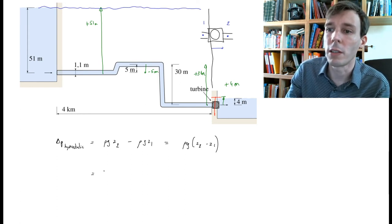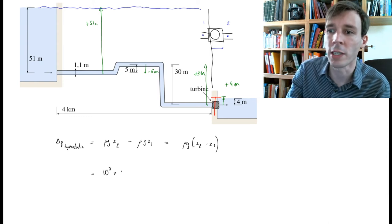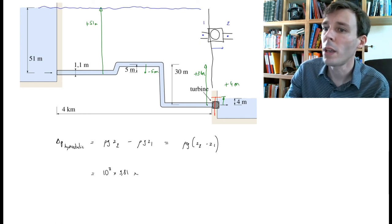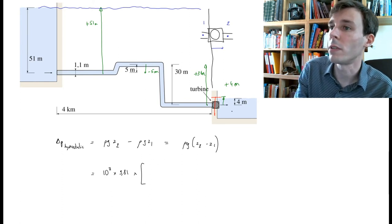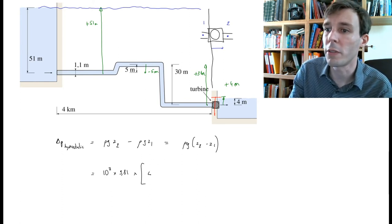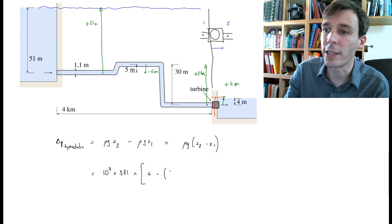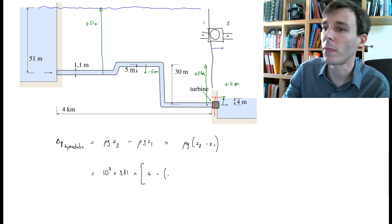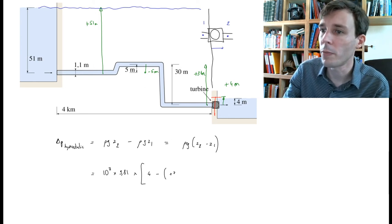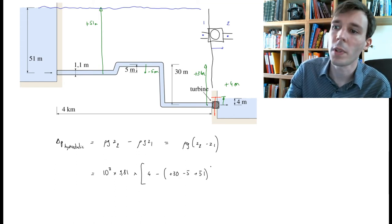ρ is the density of water, 10³ kg/m³, g is 9.81 m/s². Then we calculate the difference in altitude: z2 is 4 meters, and z1 is 30 minus 5 plus 51.